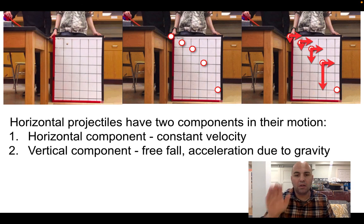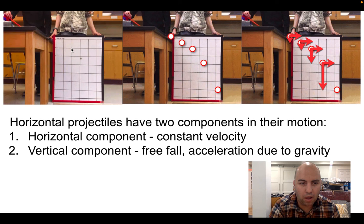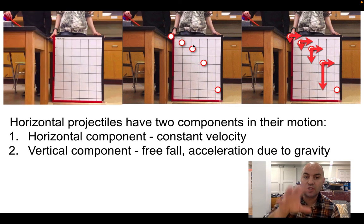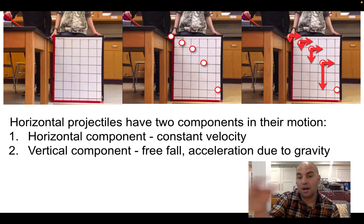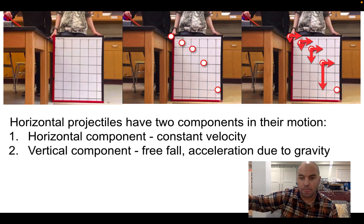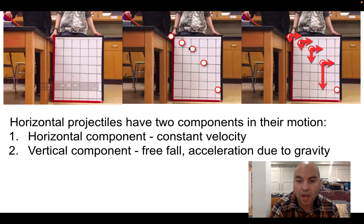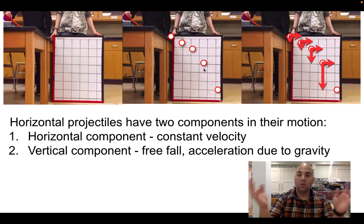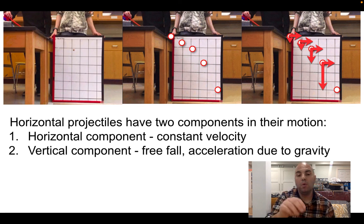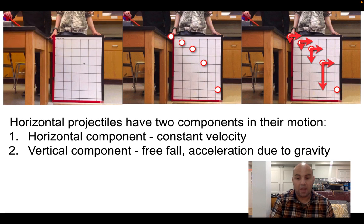If we make a motion map of what's happening, the horizontal distance covered each interval is exactly the same — that's our horizontal component traveling at constant velocity, moving to the right at the same rate the entire time. But vertically, each interval the ball travels a little farther, meaning it's accelerating. The vertical component is in freefall — the only force acting on it is gravity — and those two components act independently of each other, which is why we get that curved path.